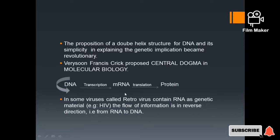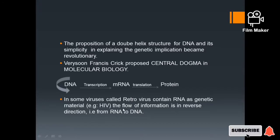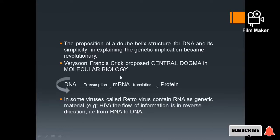In some viruses called retroviruses, RNA serves as the genetic material. For example, HIV is a retrovirus whose genetic material is RNA. In retroviruses, the flow of genetic information is in the reverse direction — from RNA to DNA.